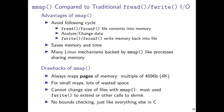We left off last time having discussed this mmap utility, which is a request to the operating system to directly manipulate the memory map and page table associated with the program to place things in that memory image. The first use we saw for this was associated with taking files that the operating system usually holds in memory itself and asking that the program receive direct access through pointers to it.